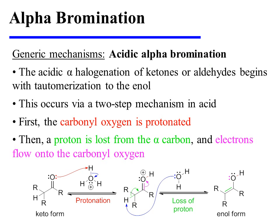Acidic alpha-halogenation begins with tautomerization to the enol, and that occurs through a two-step mechanism in acid. First, the carbonyl oxygen is protonated. Then, a proton is lost from the alpha carbon. And as this occurs, electrons flow onto the carbonyl oxygen to generate the enol form of the original ketone or aldehyde.